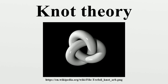A knot is created by beginning with a one-dimensional line segment, wrapping it around itself arbitrarily, and then fusing its two free ends together to form a closed loop. A knot is an injective and continuous function. When topologists consider knots and other entanglements such as links and braids, they consider the space surrounding the knot as a viscous fluid. If the knot can be pushed about smoothly in the fluid without intersecting itself to coincide with another knot, the two knots are considered equivalent. A formal mathematical definition is that two knots are equivalent if there is an orientation-preserving homeomorphism, known as an ambient isotopy.